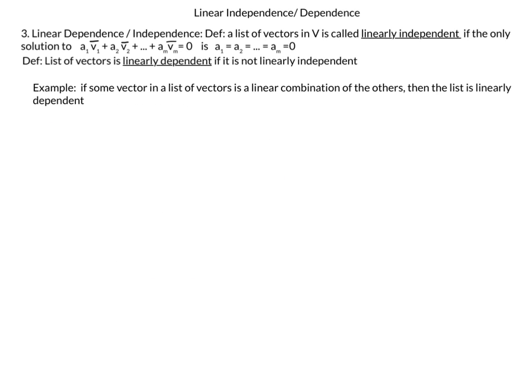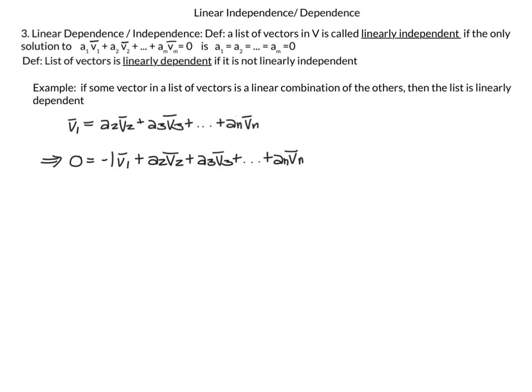If some vector in a list is a linear combination of the others, then the list is linearly dependent. For example, if v1 = a2·v2 + a3·v3 + ... + an·vn, then subtracting v1 from both sides gives 0 = (-1)·v1 + a2·v2 + ... + an·vn. This is a non-trivial solution to the homogeneous equation — at least one coefficient (-1) is non-zero — therefore the list v1, v2, ..., vn is linearly dependent.